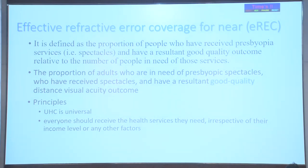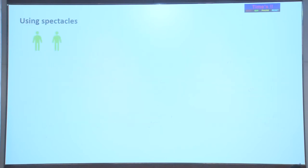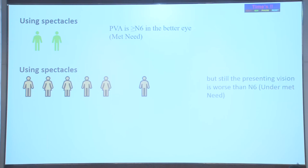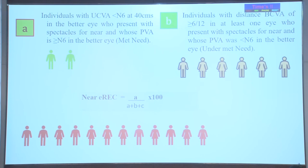Similar is the calculation for near vision coverage, which is defined as the proportion of people who have received presbyopic spectacles in comparison to those who are in need of these spectacles. The calculation is quite similar: met need divided by met plus undermet plus unmet need. Simply speaking, if two presbyopic persons are using spectacles and have presenting vision worse than N6, it is undermet need.